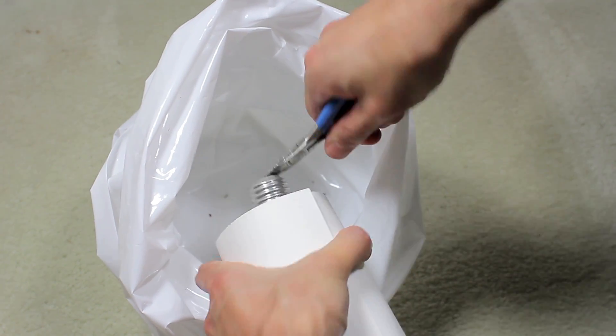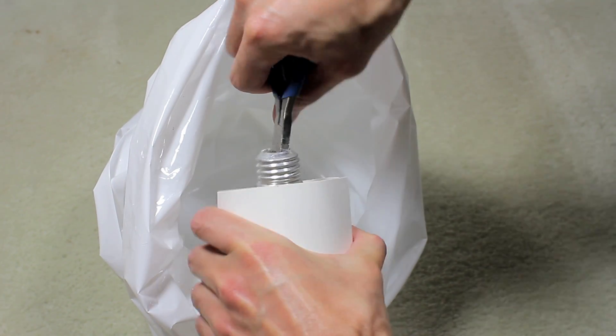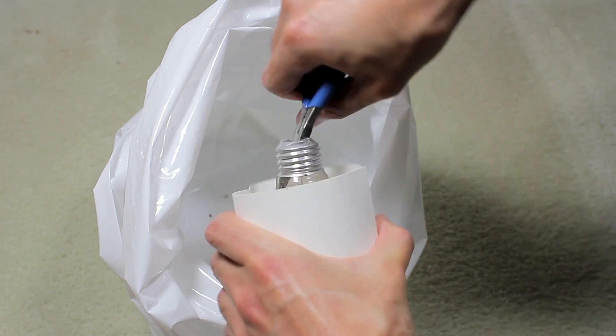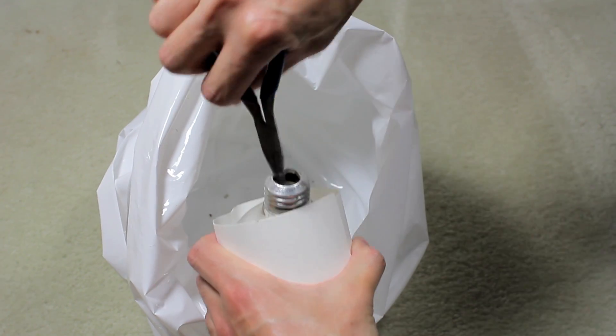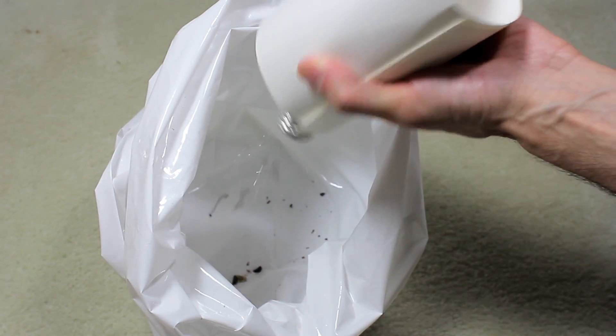After removing the bottom two portions of the light bulb, use the tip of the pliers to break the glassy central region and pour out the debris.